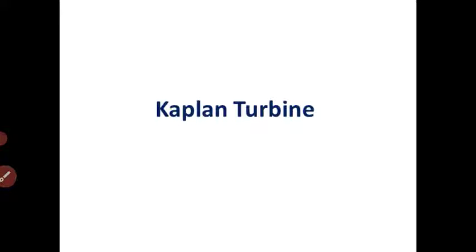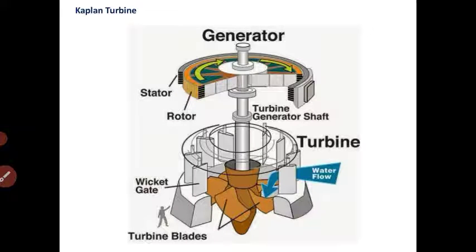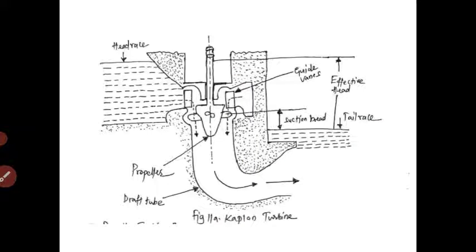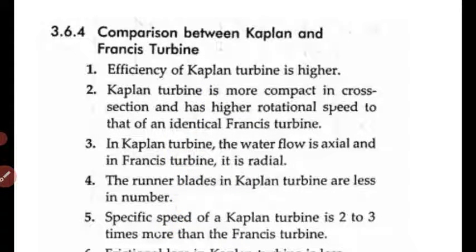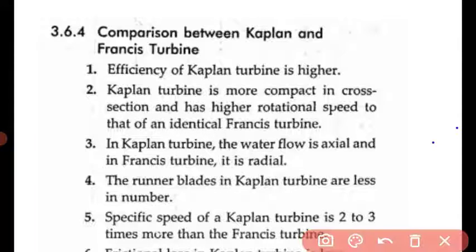Next is the Kaplan turbine, which is also a reaction type. Comparing Kaplan and Francis turbines: both are reaction turbines. The efficiency of the Kaplan turbine is higher. The Kaplan turbine is more compact in cross section and has a higher rotational speed than an identical Francis turbine.